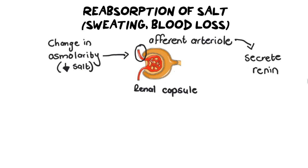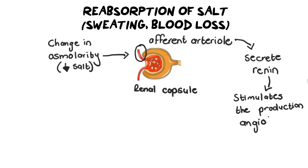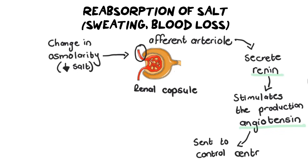Now that renin has been made in the afferent arterioles, renin then triggers another response and stimulates the production of our second hormone, which is angiotensin. You don't need to know a huge amount of detail about where or how it's made — you simply need to know that renin stimulates the production of angiotensin. From there, angiotensin is sent to the control center. Following the standard template, we need to send this information to a control center because somebody needs to do something about it, and that control center is the adrenal cortex.